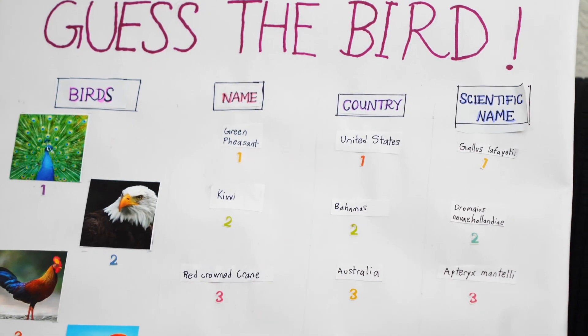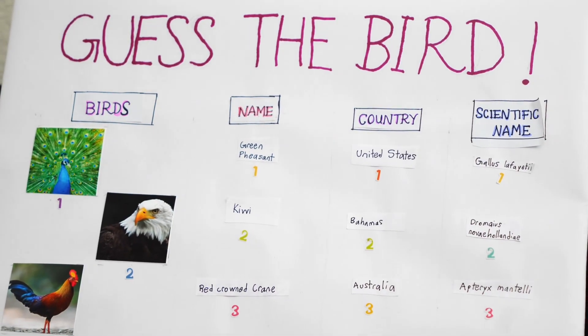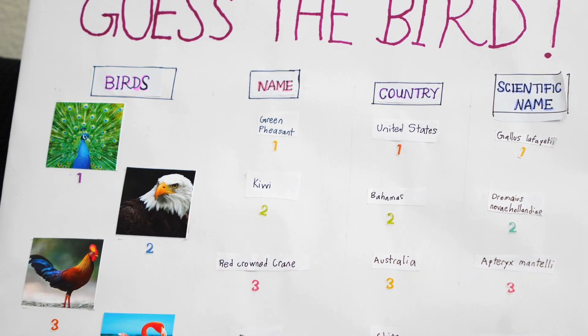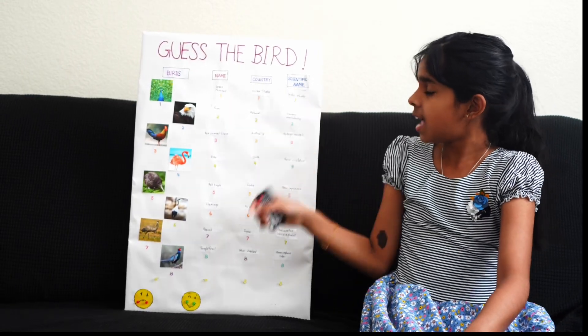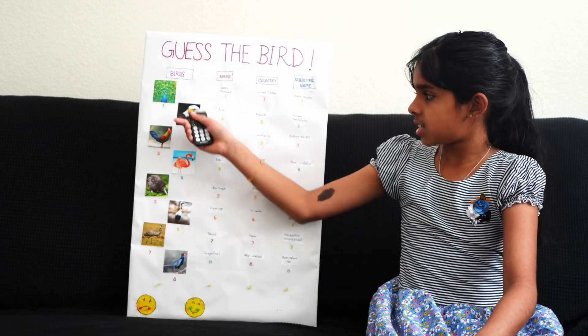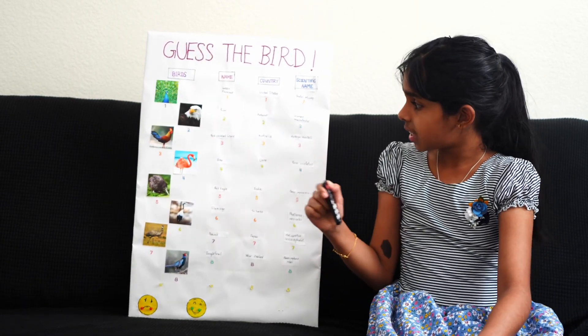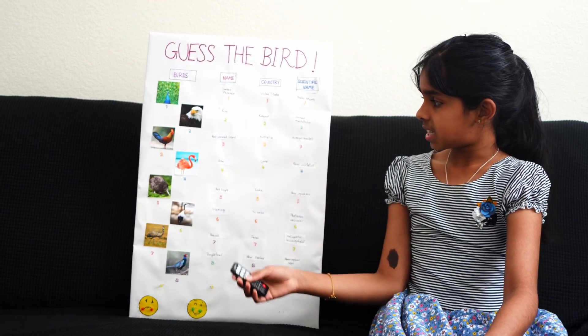First we look at the bird section. Technically there are four sections: the bird section, the name section, the country section, and the scientific section. We look at these pictures and each picture has a number beneath them. So we look at which bird we want to select.